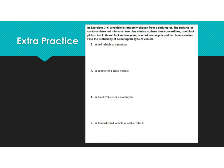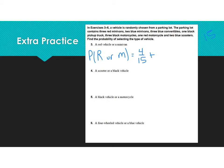A vehicle is randomly chosen from a parking lot. The parking lot contains three red minivans, two blue minivans, three blue convertibles, one black pickup truck, three black motorcycles, one red motorcycle, and two blue scooters — 15 total vehicles. Find the probability of selecting a given type. Part A wants a red vehicle or a minivan. The probability of red is 4 out of 15, plus the probability of a minivan, which is 5 out of 15.